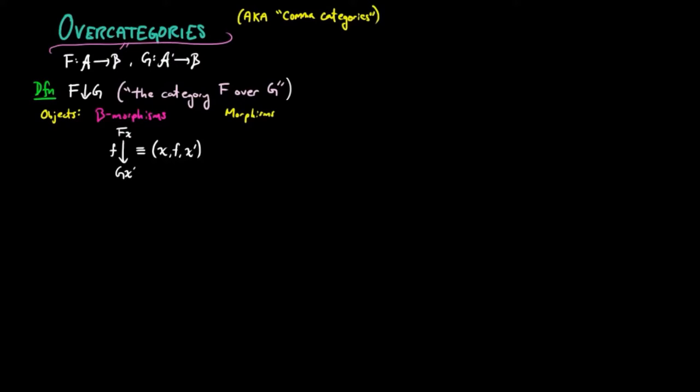And then an f over g-morphism from an object xfx prime to ygy prime is a commuting square, where h is an a-morphism and h prime is an a-prime morphism. We write this morphism as a pair h, h prime.